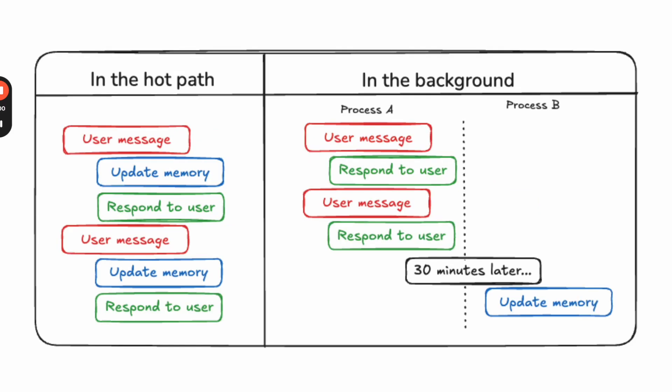Now let's talk about long-term memory. At a high level, we see two different ways that people are putting long-term memory into their application. One is what we call the hot path, where the application logic itself updates memory. The other is when it happens in the background — a separate process runs and updates memory. This can happen real-time, or it can happen 30 minutes later, an hour later, whatever you decide.